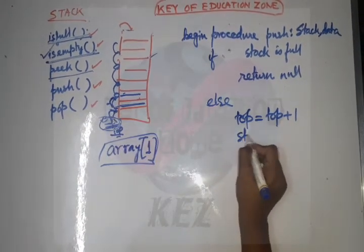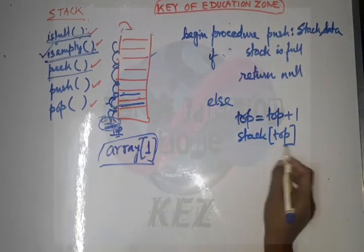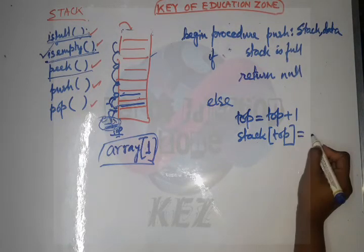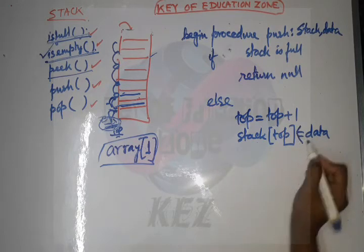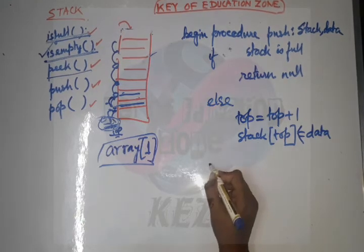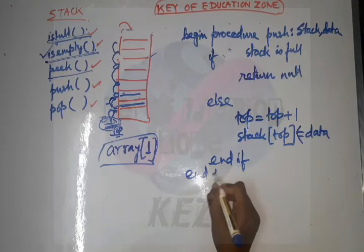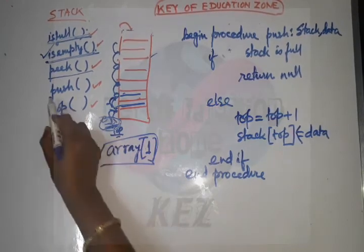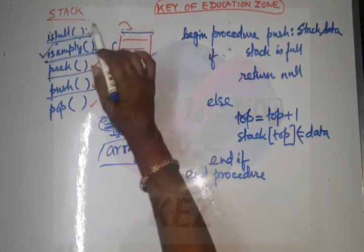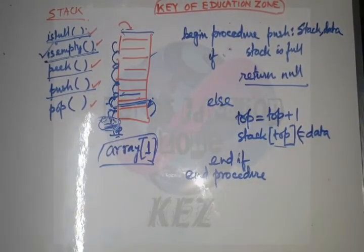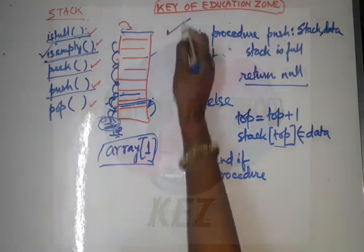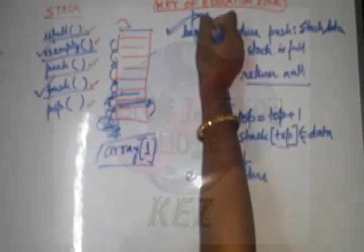After incrementing top, write stack[top] equals data — meaning at the new top position in the array, the data is inserted. End if. End procedure. So for push: first check if full; if full return null; else increment top and insert the data at that array position. This completes the push operation.